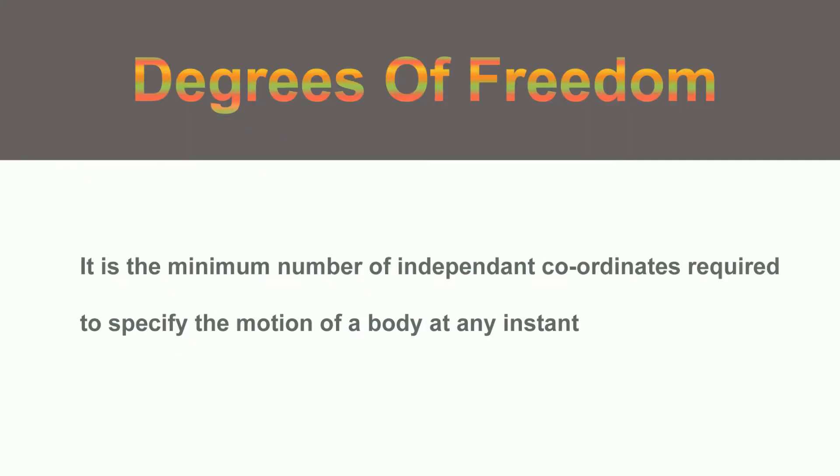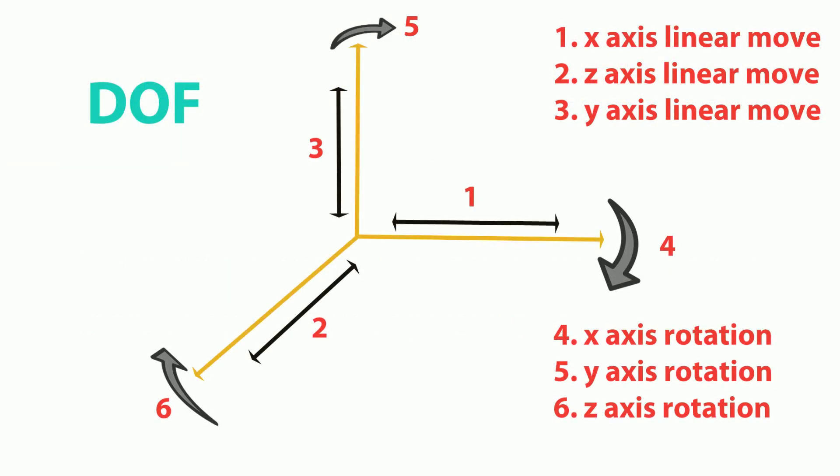Hi guys, welcome to Learn Mechanical. Today we are going to talk about degrees of freedom. The degree of freedom is the minimum number of independent coordinates required to specify the motion of a body at any instant.